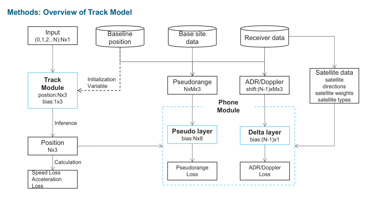The blue boxes in phone modules are the layers to calculate pseudo-range loss, ADR loss, and Doppler losses. The outputs from the track module are the coordinates of a track. They will also be used to calculate speed and acceleration losses.